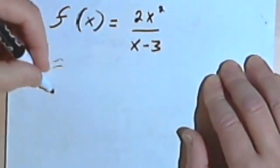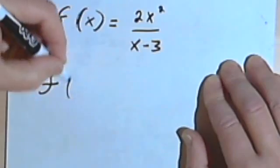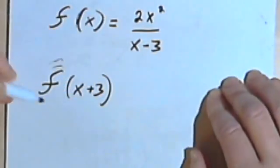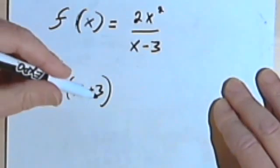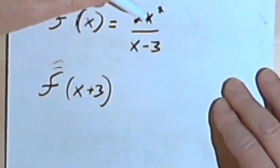Let's look at something a little more complicated. Let's say I want f of x plus 3. So remember, all that means is I'm going to take this x plus 3 and put it into my original function wherever I had an x.